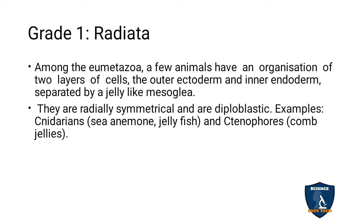Radiata is diploblastic, meaning only two layers. Examples include Cnidarians — sea anemone and jellyfish — and Ctenophora, which are comb jellies. So Radiata means Eumetazoan animals with two layers (ectoderm and endoderm), radial symmetry, and diploblastic organization.